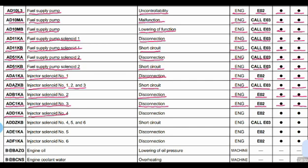Code ADD1KA: the part is injector solenoid number 4 and the problem is disconnection. Controller is the engine controller. Action code E02. Lamp is blinking and buzzer is beeping. Code ADDZKB: the part is injector solenoid numbers 4, 5 and 6 and the problem is short circuit. Engine controller involved.